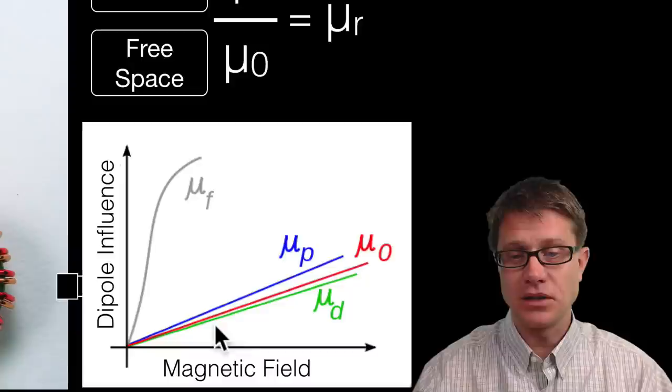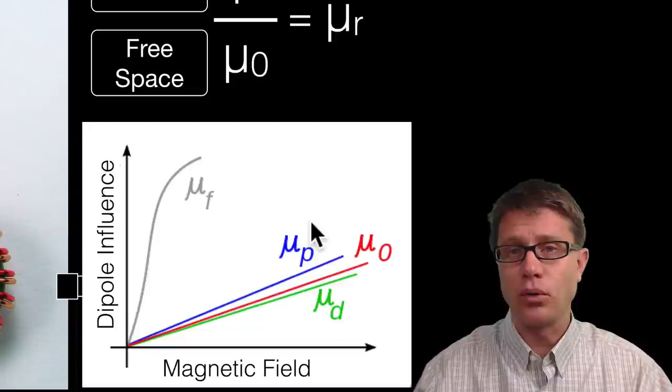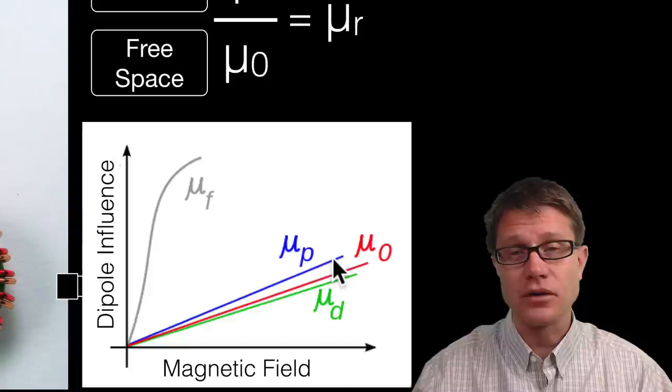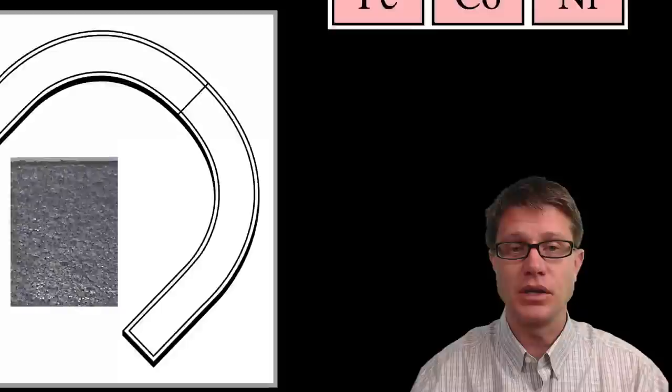And so paramagnetic material are going to increase their dipole influence as we increase the magnetic field. You can see it is a linear relationship. But they are going to be slightly greater than free space and diamagnetic material slightly less than free space in their ability to be magnetized. And so paramagnetic material would be like iron, cobalt, nickel.